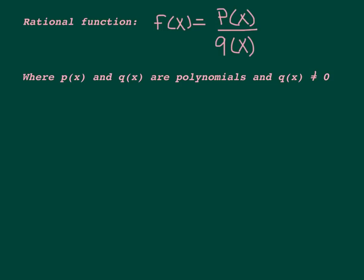So the general form of a rational function — rational means fraction — is f of x equals p of x, being some polynomial, divided by q of x, another polynomial. So just a polynomial divided by a polynomial, kind of like we did with the long division yesterday. And q of x does not equal 0, because we can't divide by 0, and that's very important for when we're going to graph our rational functions.